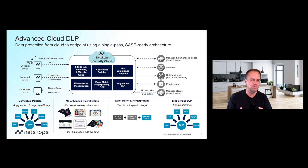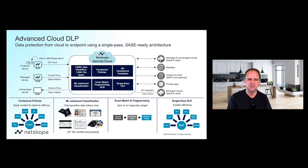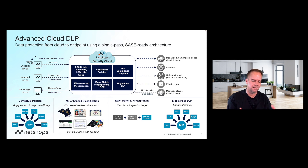This is truly a single-pass, multi-vector architecture. With Netscope, you can now protect data in any of the thousands of cloud applications, any of the websites, S3 buckets, Azure Blob storage, outbound email, internal private applications, and now extended all the way to USB storage. All of the advanced capabilities — from machine learning-based classification to fingerprinting to exact data match — you now get them across all of those vectors.